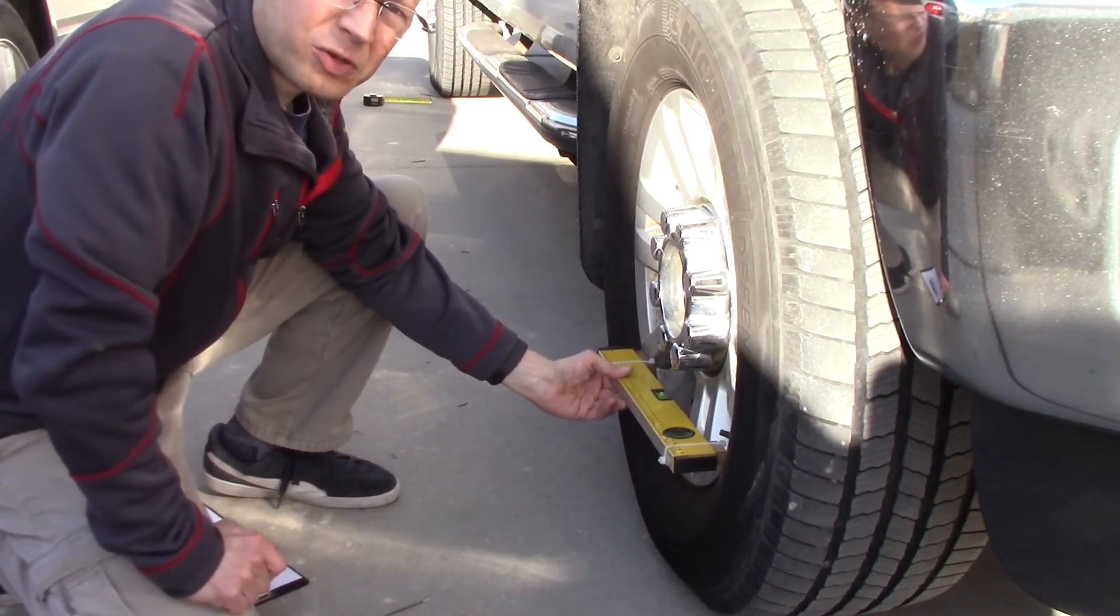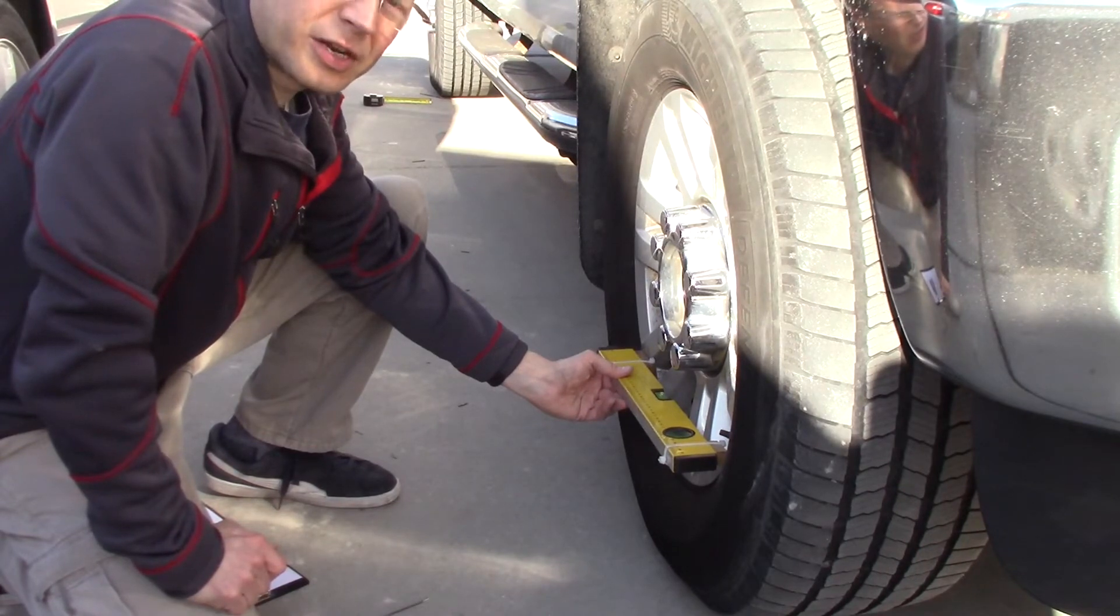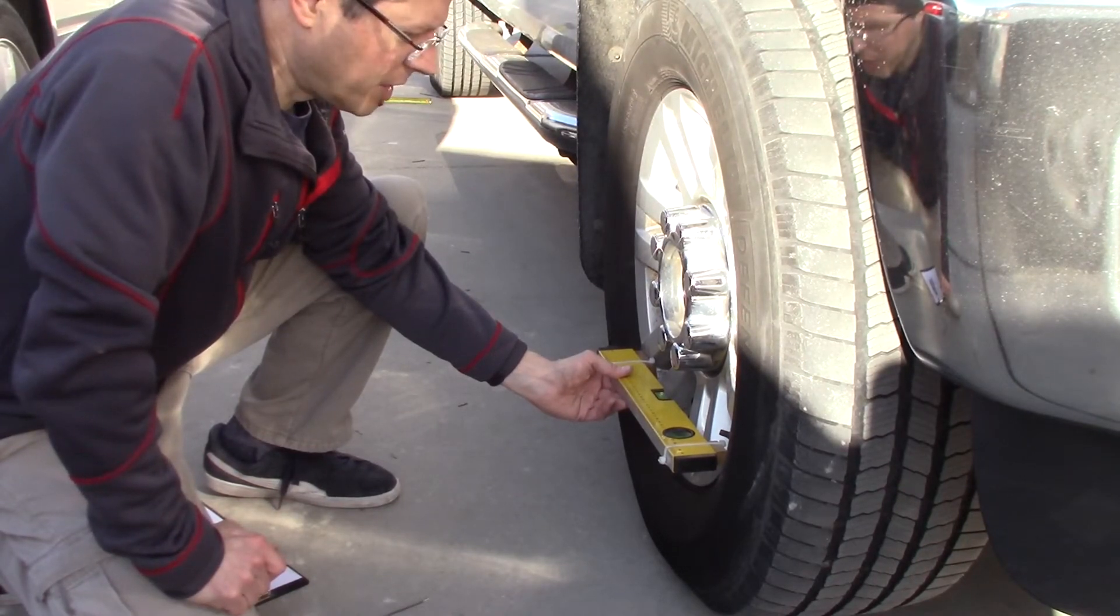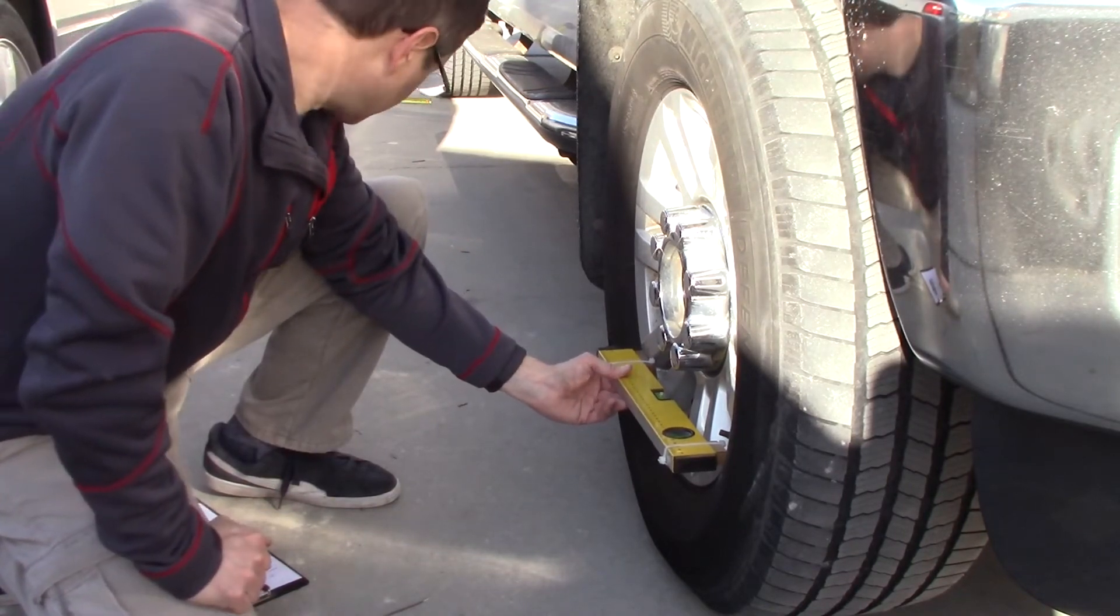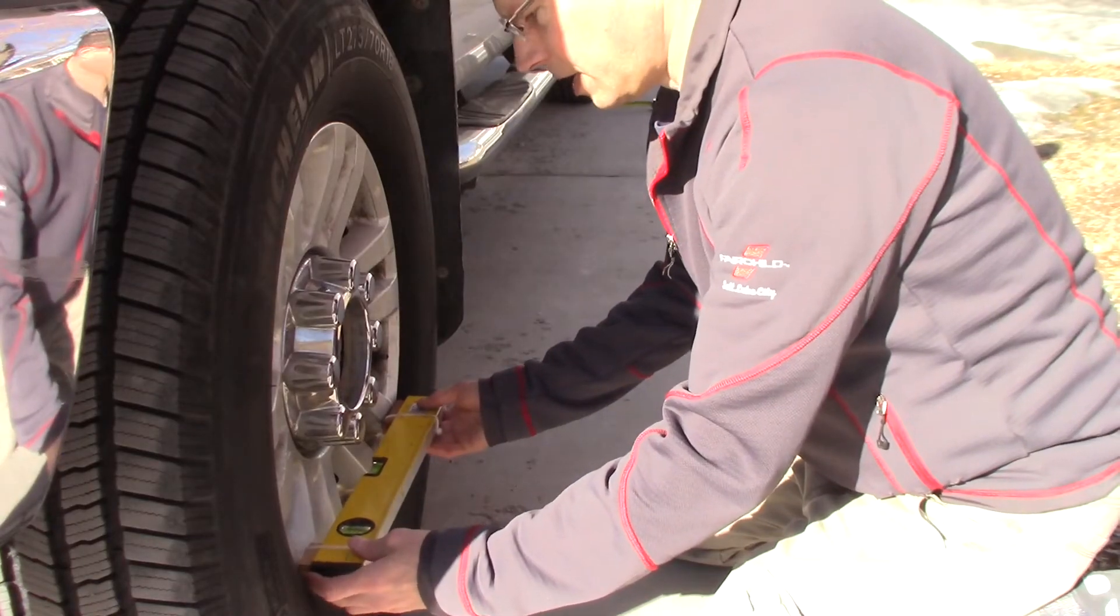Probably at three quarters of an inch out. We're targeting a half inch out for zero toe angle. We'll see if the steering is centered, but that's pretty dang close, right on the edges of the rims.